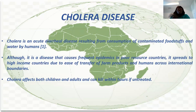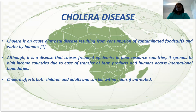Cholera disease is more of a bacterial disease that contaminates food and water, causing diarrhea disease. When a person takes contaminated food, the person becomes infectious. Although it can cause epidemics in certain countries, it can spread to high-income countries due to transfer of food products or human transfer across boundaries. Cholera disease affects both children and adults, and can be fatal within hours if not treated immediately, because an infected person can become severely dehydrated, which can lead to many complications.